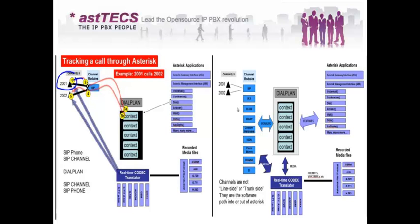Asterisk understands that a SIP channel module is going to be used. The SIP channel module enables this user to make a call, and according to the dial plan — for example, checking the sip.conf file to see what context is allowed for this particular user — if they are authenticated to dial 2002, the call is routed to that dial plan context. According to the dial plan rules, in this case the Dial application from the Asterisk Application API is invoked and dials out the call to 2002.